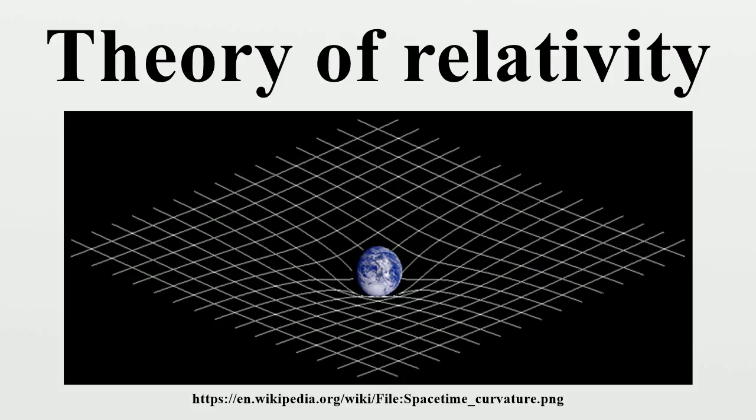The Ives-Stilwell experiment was carried out by Herbert Ives and G.R. Stilwell first in 1938 and with better accuracy in 1941. It was designed to test the transverse Doppler effect, the redshift of light from a moving source in a direction perpendicular to its velocity, which had been predicted by Einstein in 1905. The strategy was to compare observed Doppler shifts with what was predicted by classical theory and look for a Lorentz factor correction. Such a correction was observed, from which was concluded that the frequency of a moving atomic clock is altered according to special relativity.